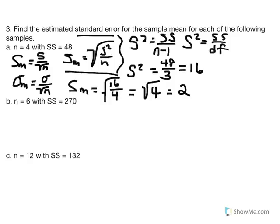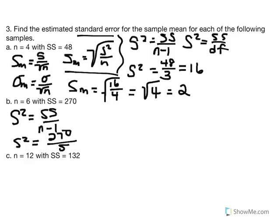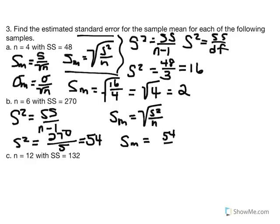n equals 6 with SS equal to 270. Again, we begin with the calculation of variance. Variance equals SS over n minus 1, so variance equals 270 over 5. In our calculators, 270 divided by 5 gives us 54. Now we can calculate our estimated standard error: it equals the square root of variance over n, which is the square root of 54 over 6. 54 divided by 6 equals 9, and the square root of 9 is equal to 3.